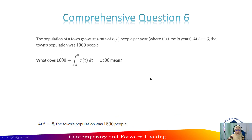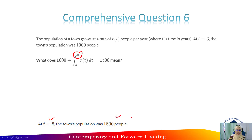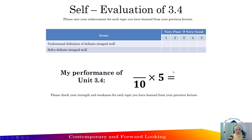Comprehensive question 6: the population of a town grows at a rate of R(t) people per year, where t is time in years. At t equal to 3, the town population was 1,000 people. At t equal to 8, the town's population was 1,500 people.